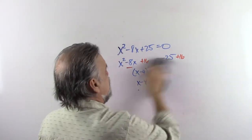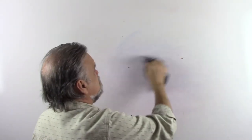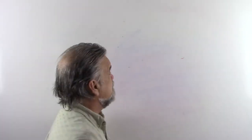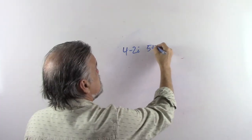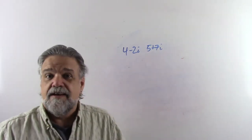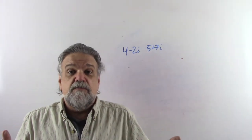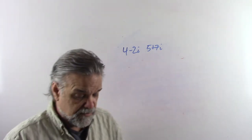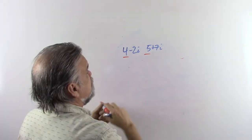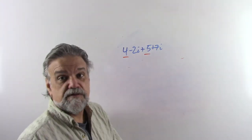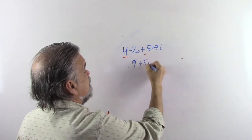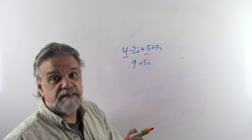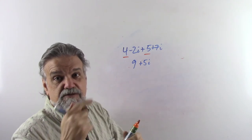So what do we do with complex numbers? Well, we do arithmetic. Let's say we had (4 minus 2i) and wanted to add (5 plus 7i). If you've ever added binomials, you know exactly what to do — just combine like terms. The real parts: 4 plus 5 is 9. The imaginary parts: negative 2 plus 7 is 5i. So the answer is 9 plus 5i. Subtraction works the same way — just remember to distribute your minus sign.